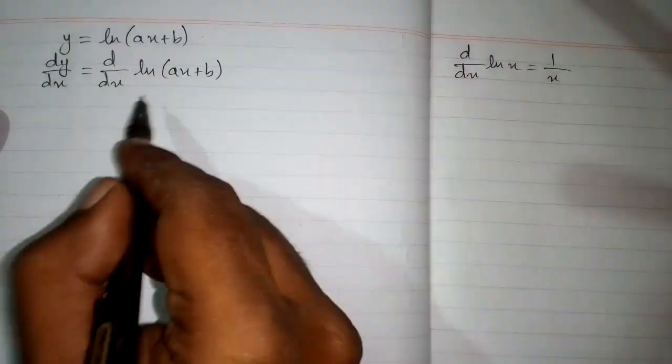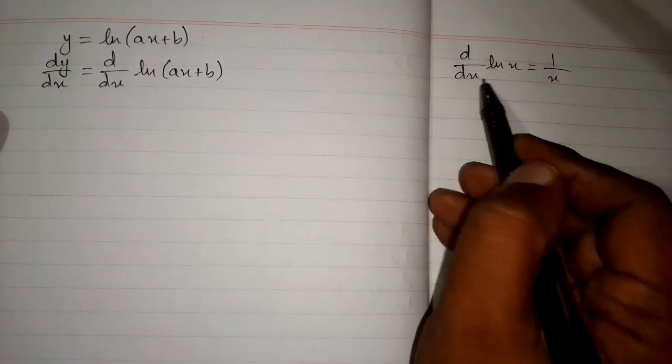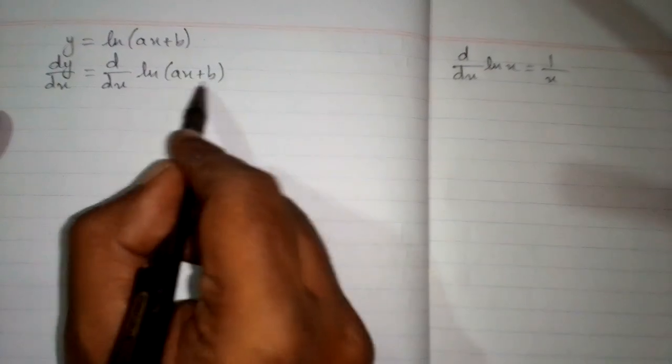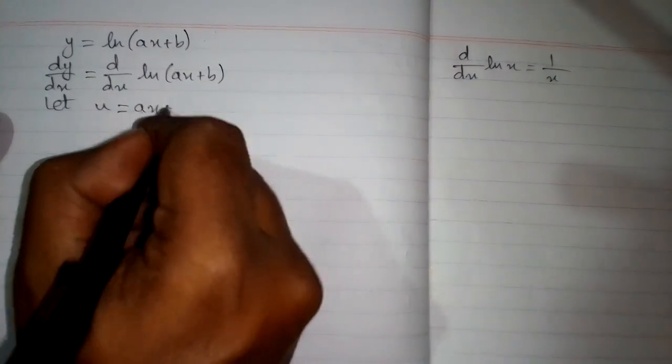So we can apply this formula over here, but this variable and this variable must be same. And we can see that we don't have this thing and this thing same. So first of all let u equals ax plus b.